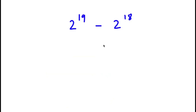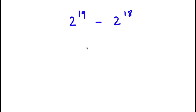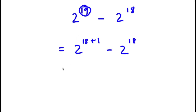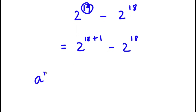In this problem I have 2 to the power of 19 minus 2 to the power of 18. To solve this, I'm going to start by rewriting 19 as 18 plus 1. So now I have 2 to the power of 18 plus 1 minus 2 to the power of 18. Now if I have something in the form a to the power of m plus n, this is simply equal to a to the power of m times a to the power of n.